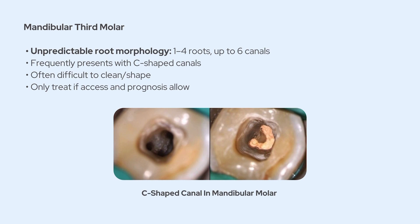Finally, the mandibular third molar, like the maxillary third, is really variable. Root morphology can be pretty unpredictable — you might find one to four roots and up to six canals. Some of these even have C-shaped canals, especially in mandibular thirds, and those can make cleaning and shaping really challenging. The decision to treat really depends on access, the available canal morphology, and the long-term prognosis.